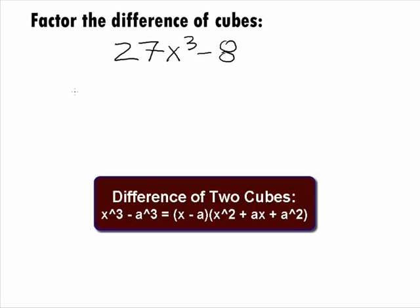Plus the product of the two bases, which is ax, plus the last base squared, getting a squared.